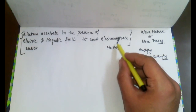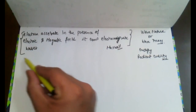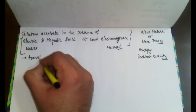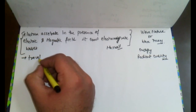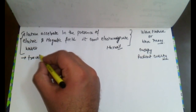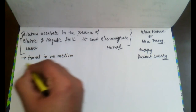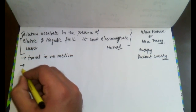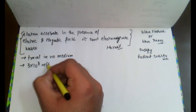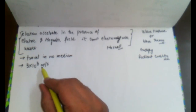These electromagnetic waves have certain characteristics. When formed in the presence of electric and magnetic field, they have the tendency to travel in no medium — that is, they do not require any medium to travel. The second characteristic: these waves have a velocity of 3 × 10⁸ meters per second. For example, sun rays reach us after passing through space, which has no material medium.